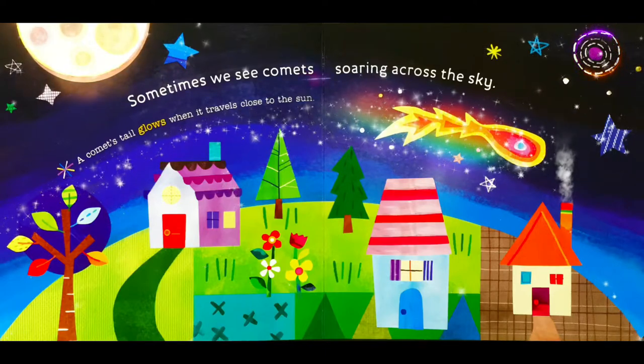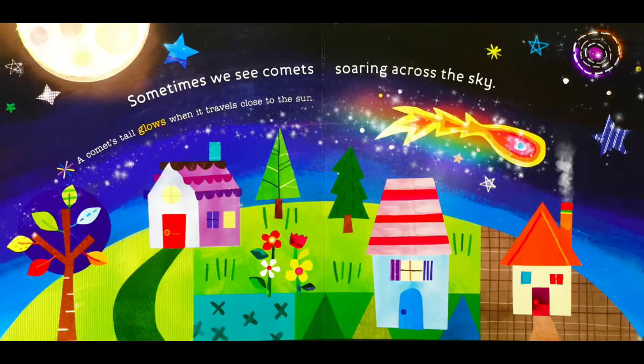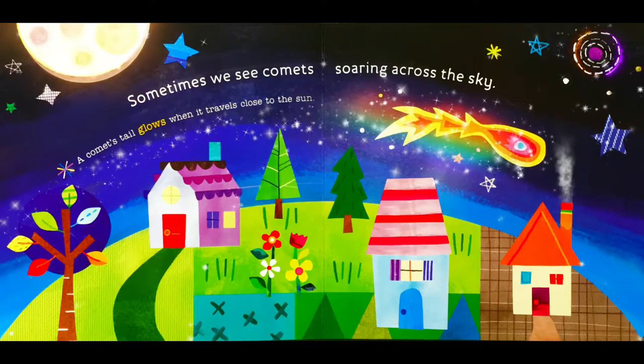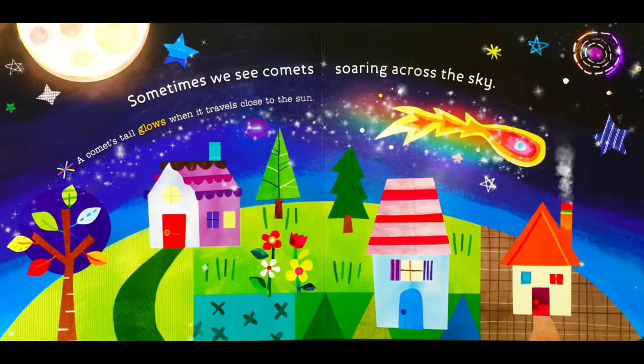Sometimes we see comets storming across the sky. A comet's tail glows when it travels close to the sun.